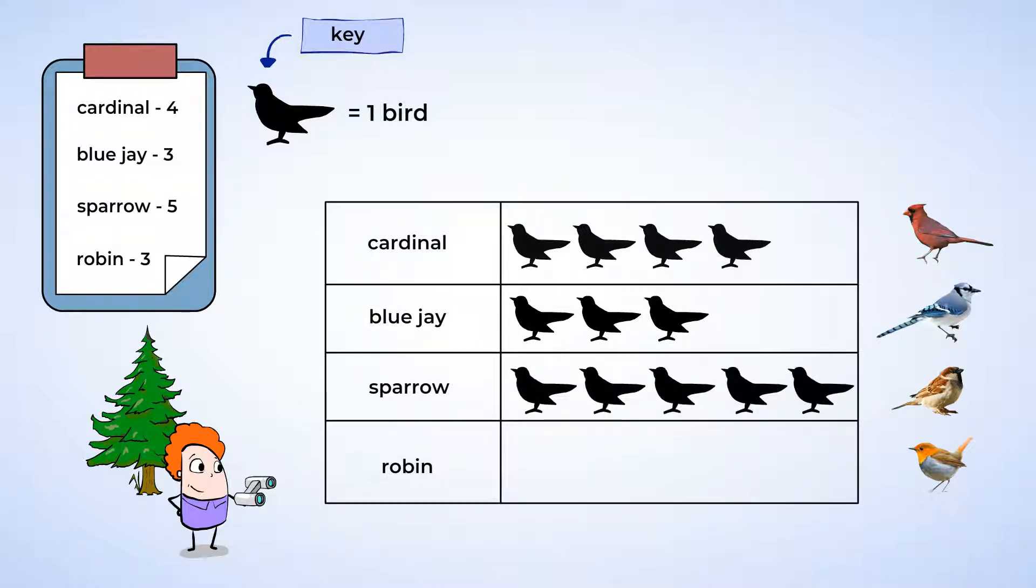Finally, we saw three robins, so put three bird pictures in the robin row. Our picture graph is almost complete. We just need a title. A good name for this graph is Birds We Saw. Great work!